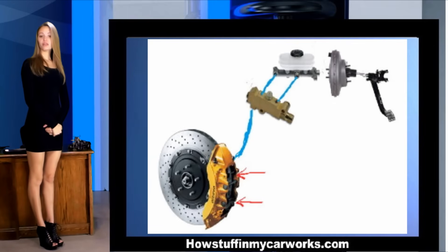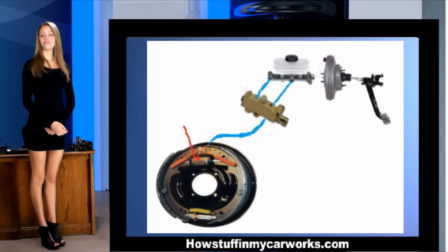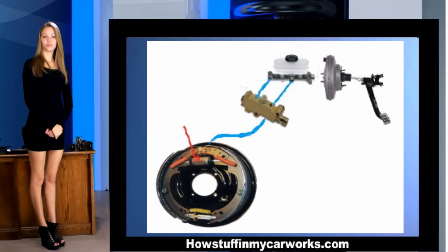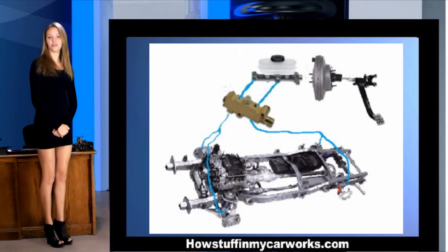This equalized pressure leaves the brake proportioning valve and reaches the brake calipers located on the front wheels. If your vehicle has rear drum brakes, the pressure will encounter the wheel cylinders. Most modern cars have rear disc brakes, so the pressure will encounter the brake calipers.